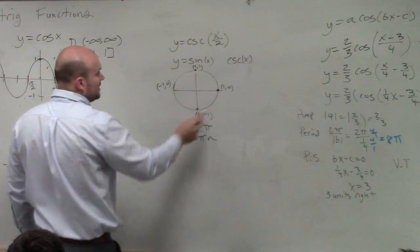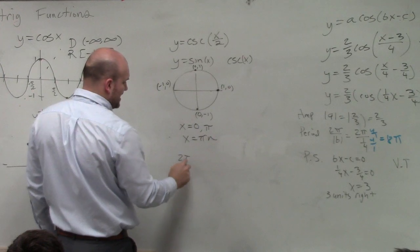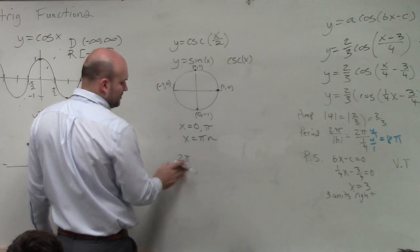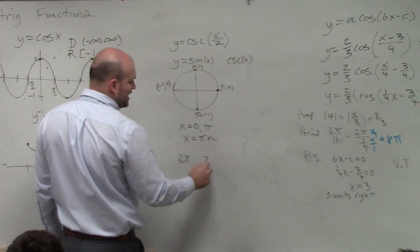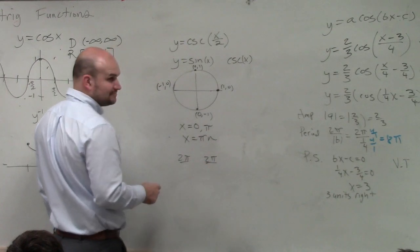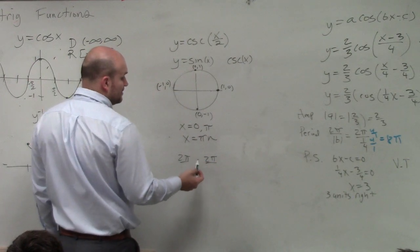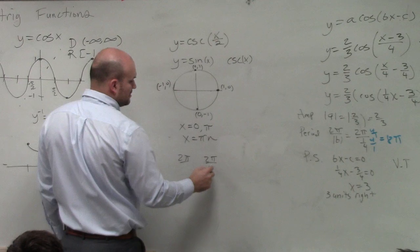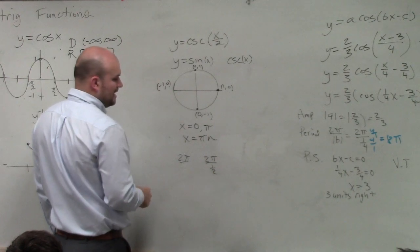If originally, our period of cosecant of x is 2 pi divided by b, right? But now, my period has changed from 2 pi divided by 1 half.